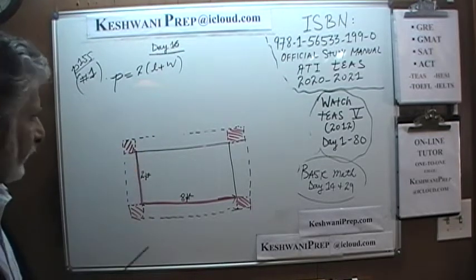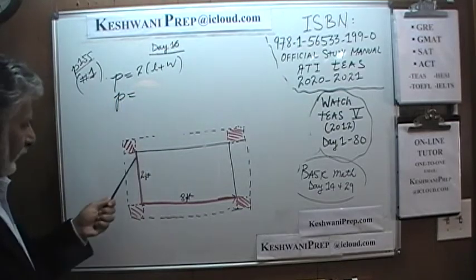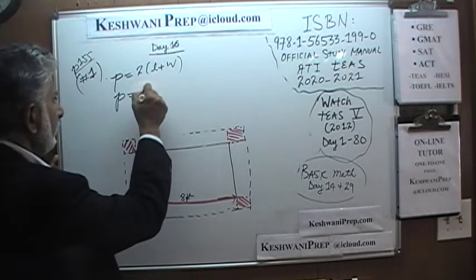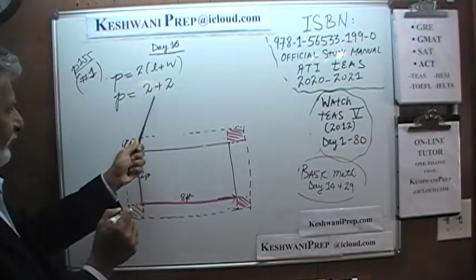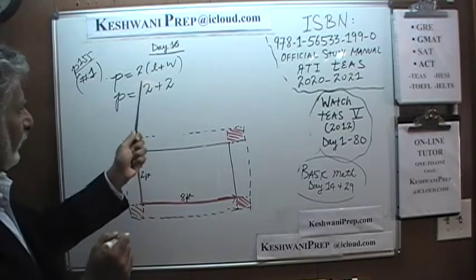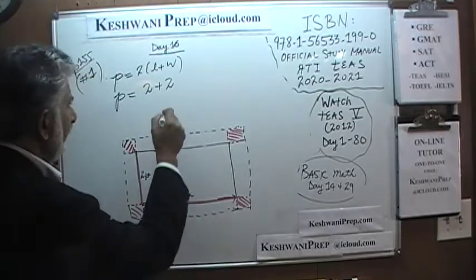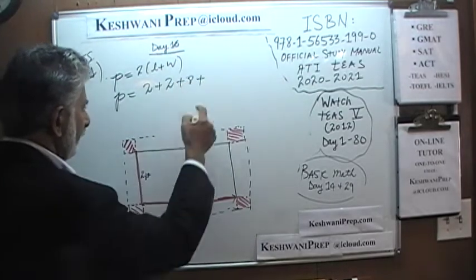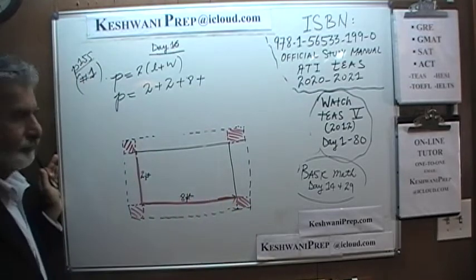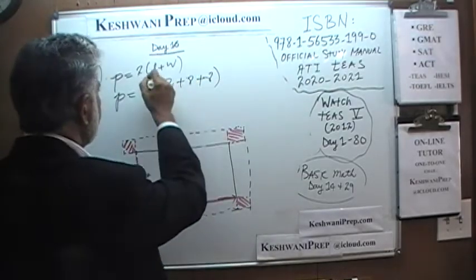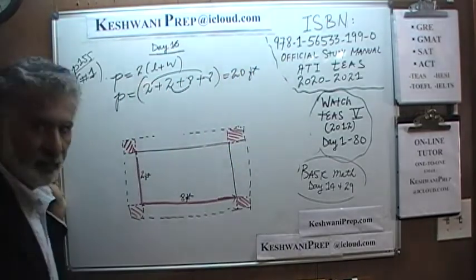The perimeter is simply two times the length plus the width. It's going to be 2 feet this way and 2 feet that way for the widths, and 8 feet for each length. Two times the width and two times the length — this side, that side, this side and that side. That's the perimeter. That's exactly 20 feet.